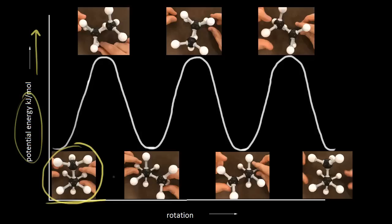We started with the staggered conformation of propane and we rotated it 60 degrees. We held the back carbon stationary and rotated the front carbon 60 degrees to give us the eclipsed conformation of propane. Notice the difference in potential energies between these two conformations: the staggered conformation has a lower potential energy, and the eclipsed conformation has a higher potential energy. The lower the potential energy, the more stable the conformation, so the staggered conformation is more stable than the eclipsed.